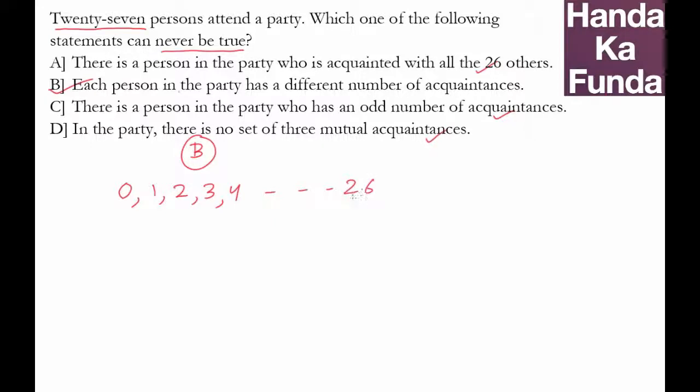So these are 27 separate possibilities, but is this possible? Let's say there is a person A who knows no one, and then there is a person X who knows all 26. How is this possible? If A knows no one, then A does not know X, there is no relationship between A and X. But if X knows everyone, X knows all 26 others, that means X knows A as well. So this statement is self-contradictory.